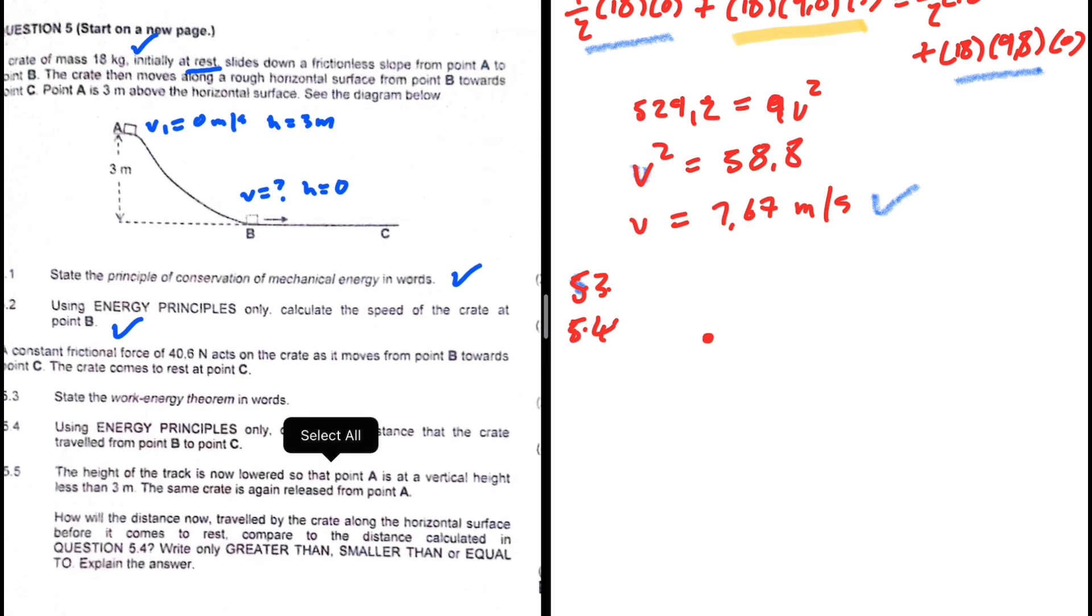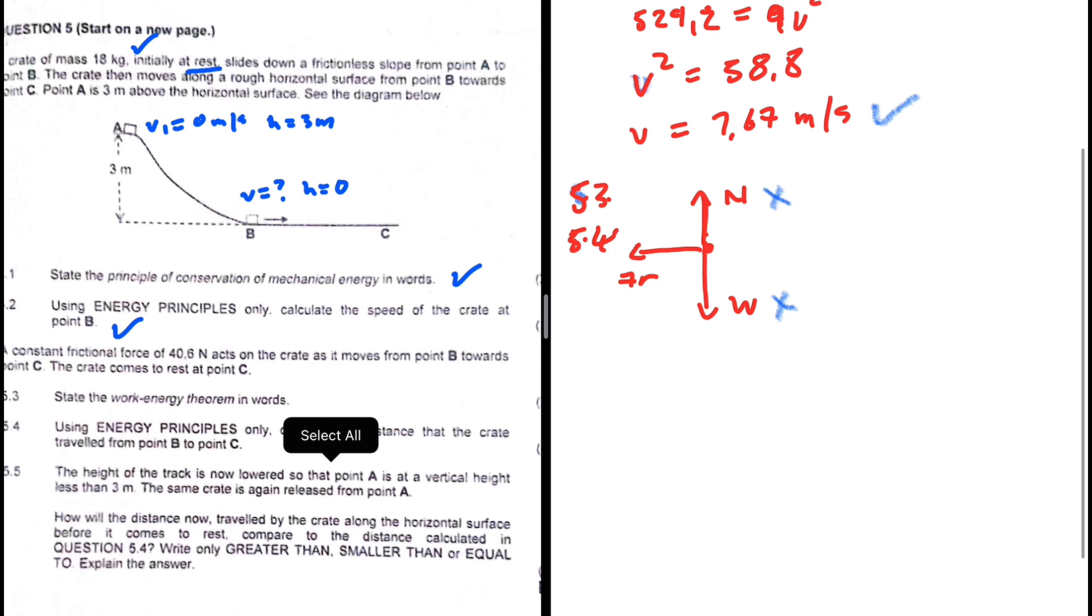Obviously we have the normal force resting on the surface and we have the weight. We don't have any force applied, we just have the frictional force. The normal force is not going to do any work, perpendicular to the displacement. Same is true with the weight. So frictional force is the only force that is doing work on the object. We're going to have work net being equal to the change in the object's kinetic energy.